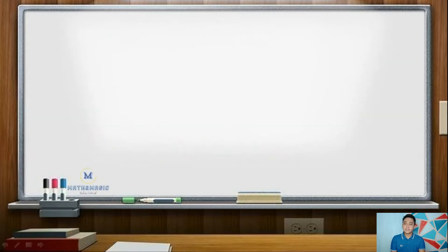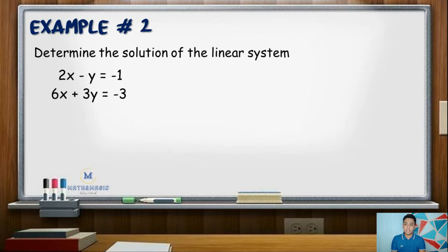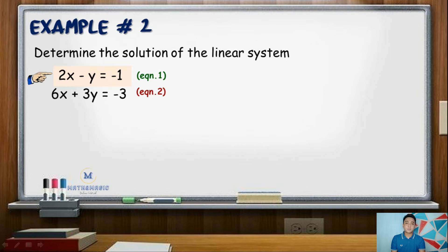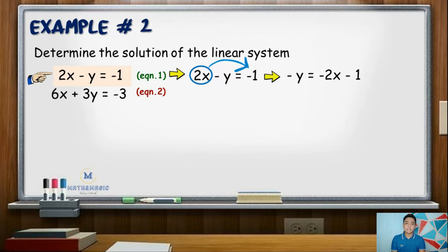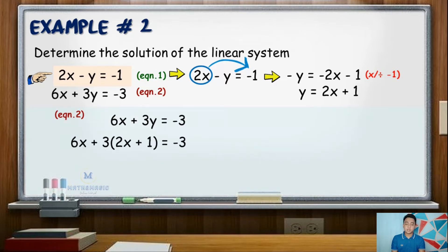For our second example, determine the solution of the linear system: 2x minus y equals negative 1, and 6x plus 3y equals negative 3. In this example, variable y in equation 1 has a numerical coefficient of negative 1. So we will rewrite equation 1 in terms of variable y. Transposing 2x to the right side gives negative y equals negative 2x minus 1. Since the coefficient of y must be positive 1, we multiply both sides by negative 1, giving y equals 2x plus 1. Substitute the value of y into equation 2: 6x plus 3 times the quantity (2x plus 1) equals negative 3.